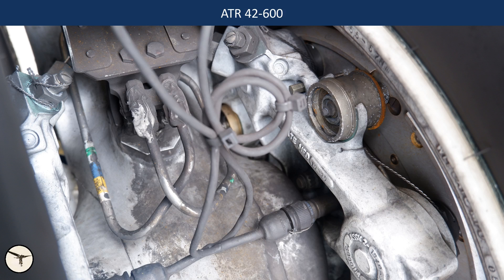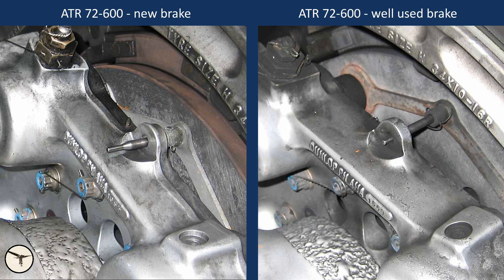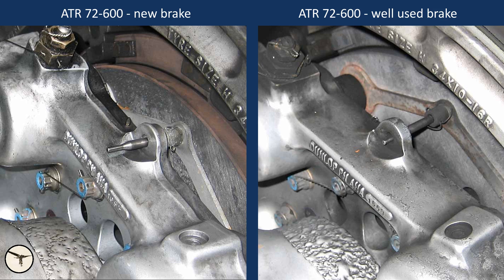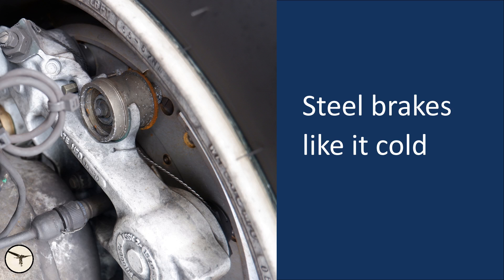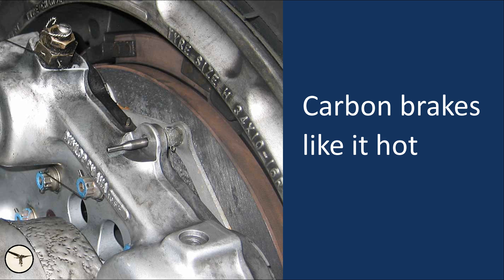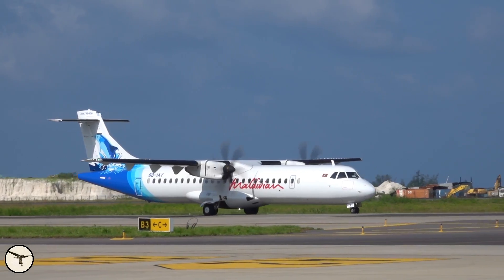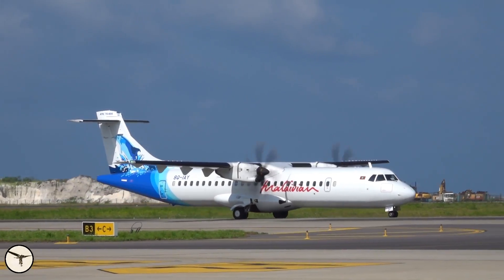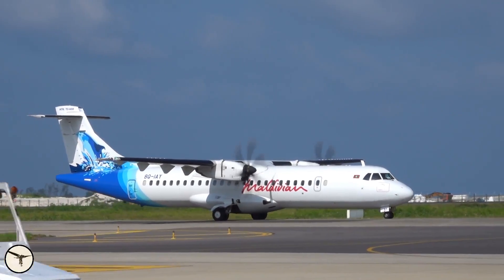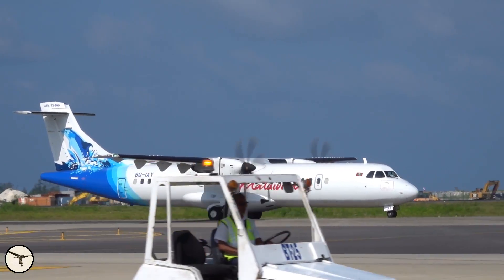The 42 has steel brakes, and the wear indicators look like this. Steel brakes are worn when they are hot. Carbon brakes are worn when they are cold. Therefore, they require a different braking technique, especially during taxi.